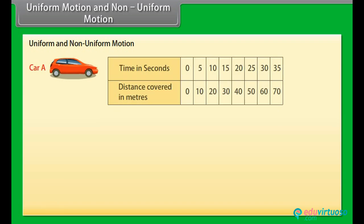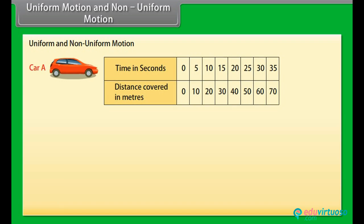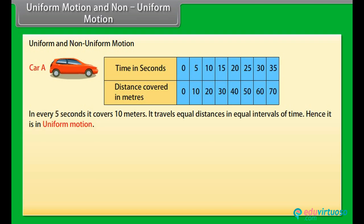Uniform motion and non-uniform motion. To understand uniform and non-uniform motion, let's take one example. Look at this table — this is the distance covered by car A. We can see that in 0 seconds it covers 0 meters, in 5 seconds it covers 10 meters, in 10 seconds it covers 20 meters, and so on. In every 5 seconds it covers 10 meters — it travels equal distances in equal intervals of time. Hence it is in uniform motion.